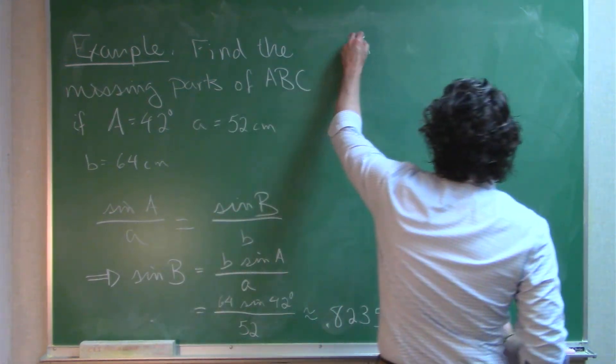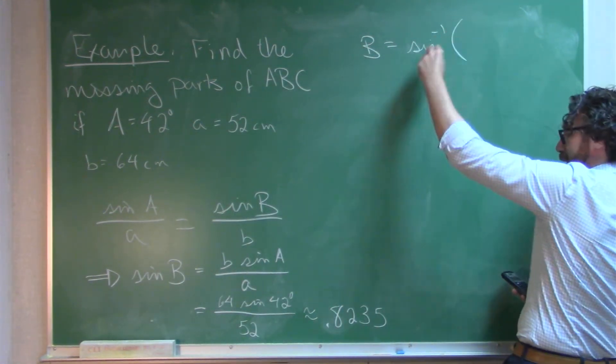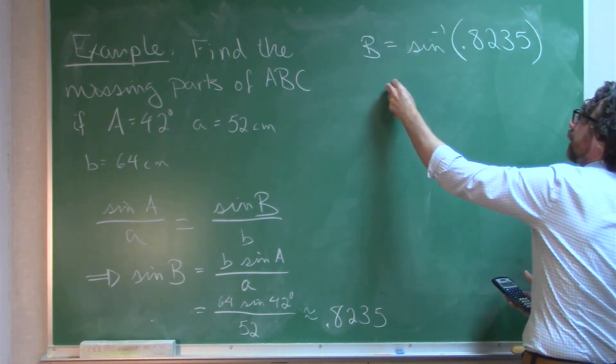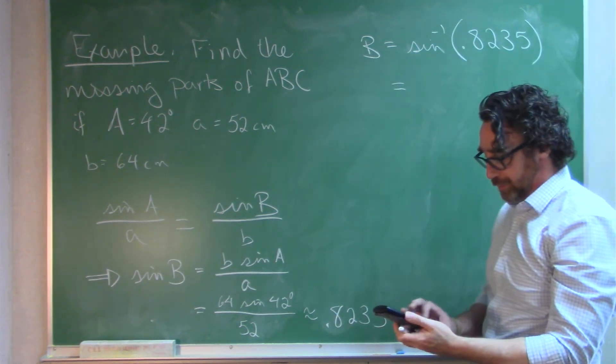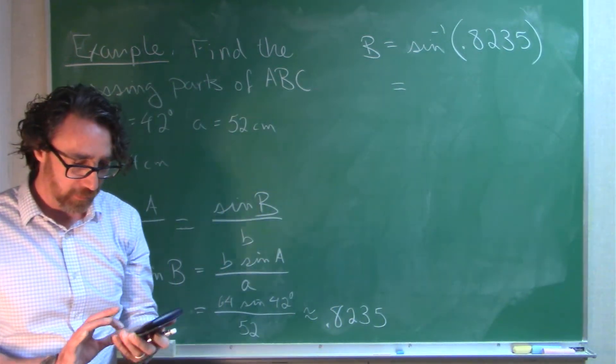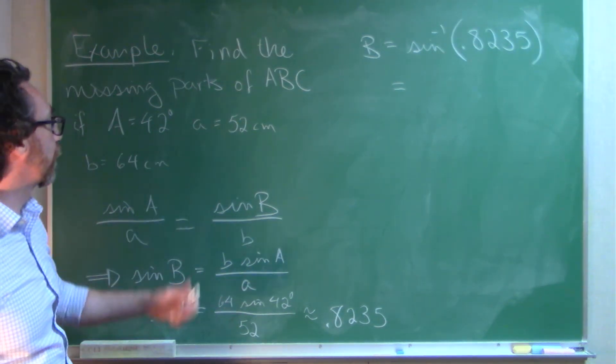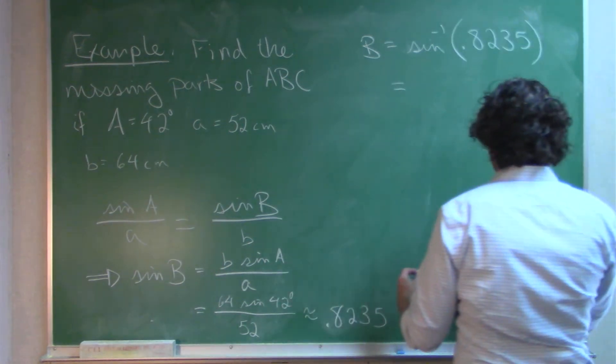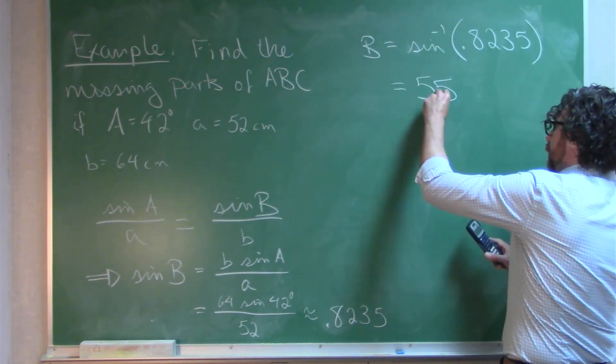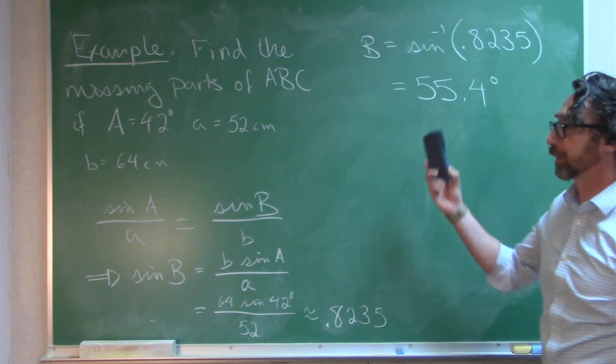So, we can find angle B, B would be sine inverse of that. Okay, so now, this is saying that angle B is 55.4 degrees.